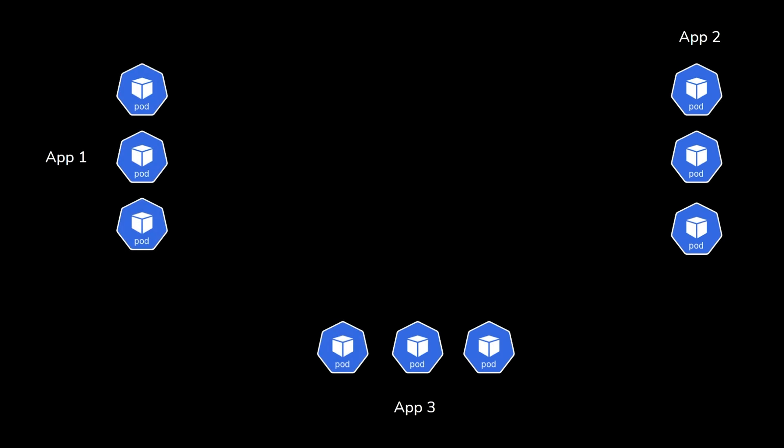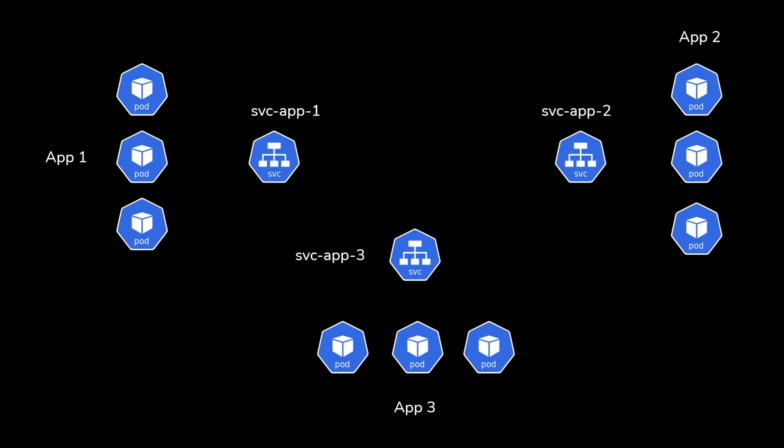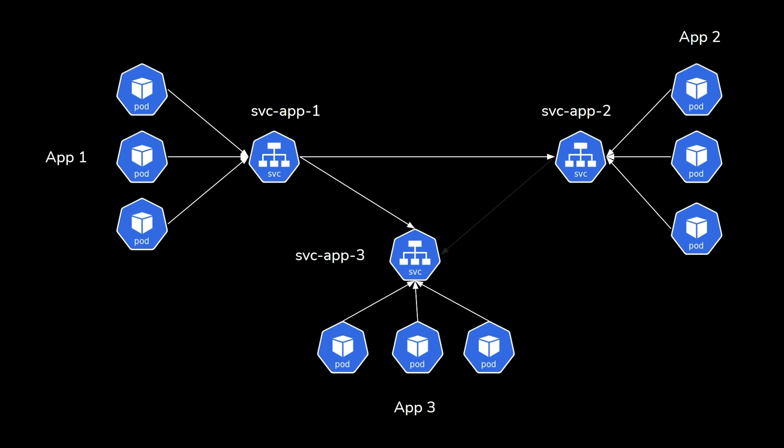We need one service that connects to all those different pods running behind it. The service acts as the front-facing component for the pods. It also load balances requests across those pods — when a new request comes in, the service decides which pods are available and able to receive it. This gives us one stable IP address through which different applications can connect.